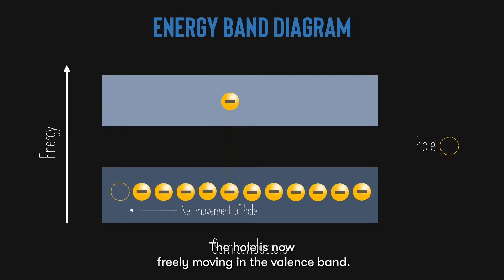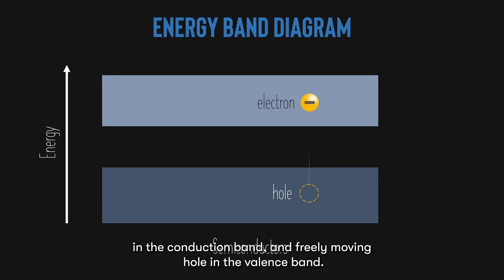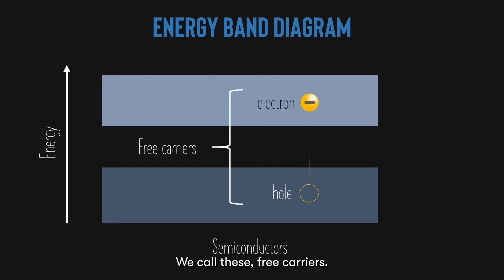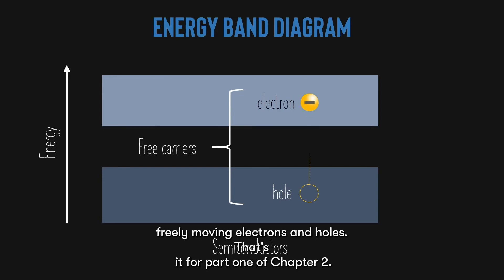The hole is now freely moving in the valence band. So, with an excitation of an electron, we created a freely moving electron in the conduction band, and freely moving holes in the valence band. We call these free carriers. Free carriers is a very important terminology that semiconductor people use to describe freely moving electrons and holes.